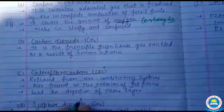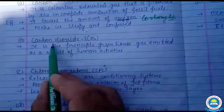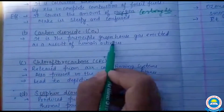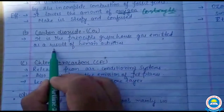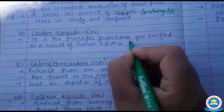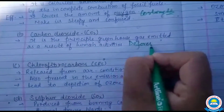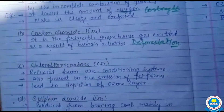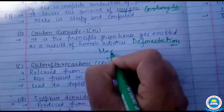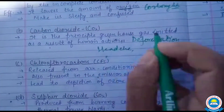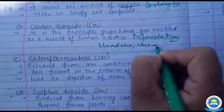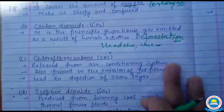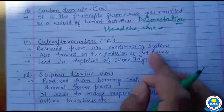Carbon monoxide हमें sleepy और confused बनाता है। उसके बाद carbon dioxide एक principal greenhouse gas है जो emit होती है as a result of human activities जैसे deforestation। Carbon dioxide की वजह से headache, unconsciousness, और inability to concentrate होती है।